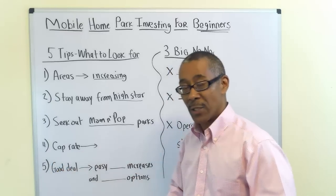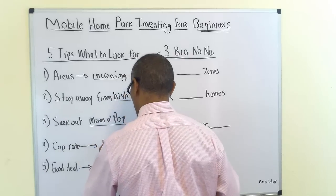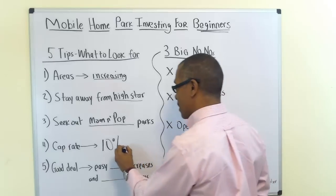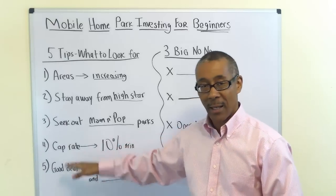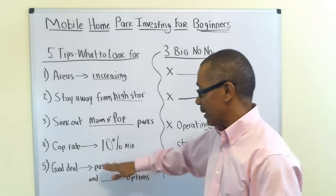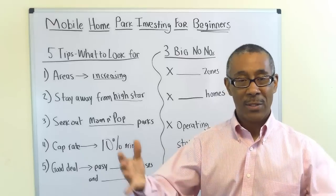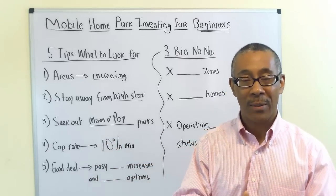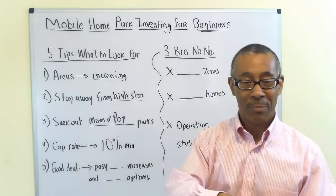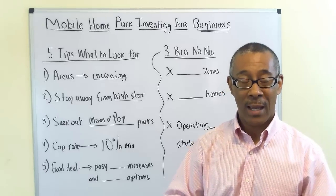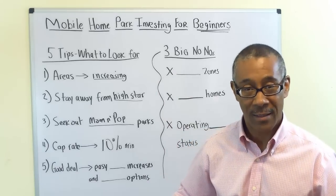Tip four: cap rate. I want you to have a going-in cap rate of at least 10% — 10% minimum. The numbers given to you when you buy the park must reflect a 10% cap rate going in — not after ownership. After you own the property, I expect you in three, four, five, or six years to have a cap rate north of 15%.